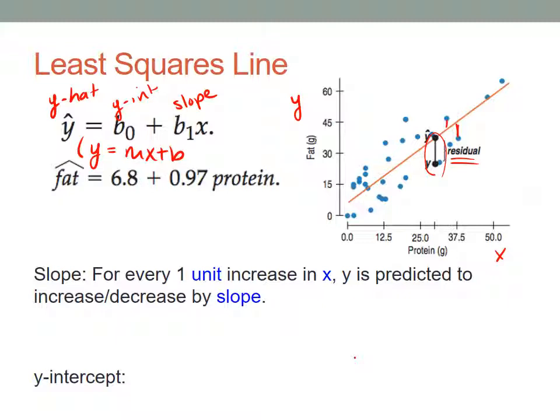After running this data through a computer program we find out that the least squares line is this one right here.